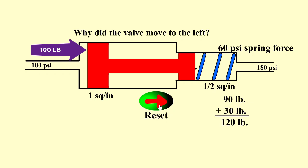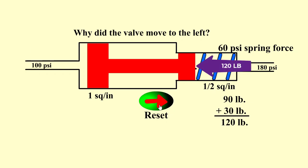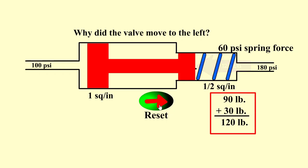We have 100 pounds of force on the left hand side trying to push it to the right. On the right hand side we have 120 pounds of force trying to push it to the left. We take the 90 pounds of force from the 180 psi of fluid pressure and add it to 30 pounds of spring force. That 30 pounds of spring force comes from 60 pounds per square inch applied to a half square inch — 60 times 0.5 is 30.